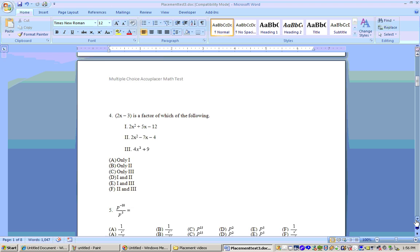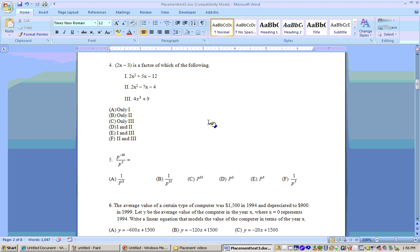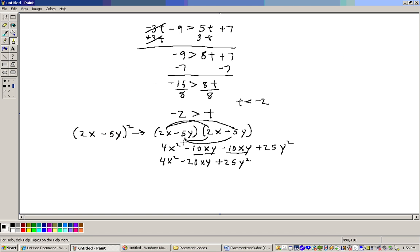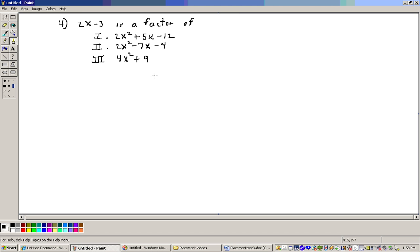Let's go on to problem 4. Problem 4 says 2x minus 3 is a factor of which of the following? Let's write these down and try to factor them. We're checking to see which one has 2x minus 3 as a factor, so we'll need to try these out. Let's try part one.